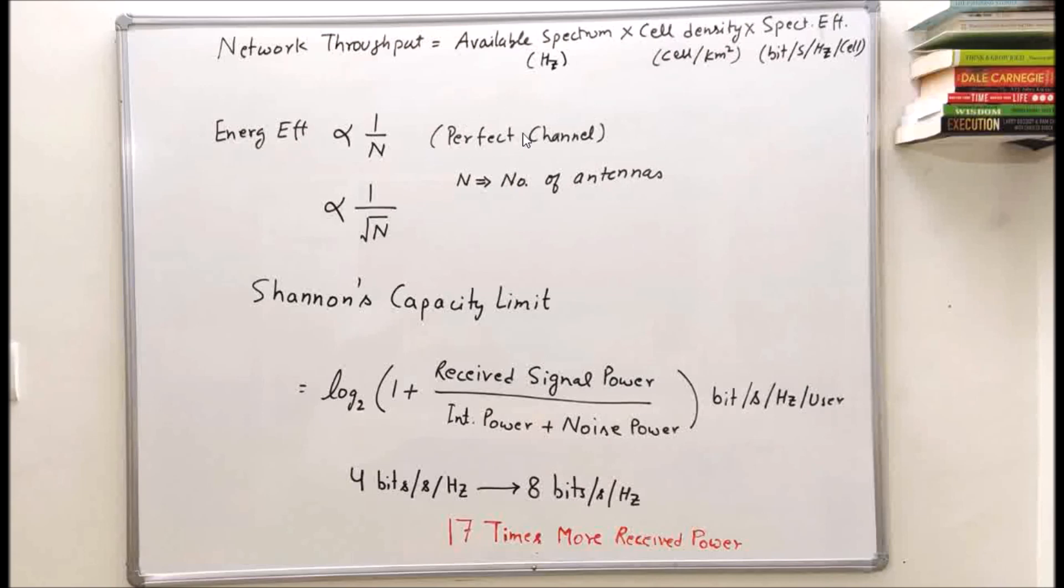Some research papers show that energy saving in massive MIMO is inversely proportional to the number of antennas. This is for perfect channel. But if we look for more practical scenario, energy efficiency is inversely proportional to the square root of number of antennas. That means if we are looking for a gain of factor of 10 in energy efficiency, then number of antennas should be increased by a factor of 100. Now let's look into famous Shannon's capacity theorem.